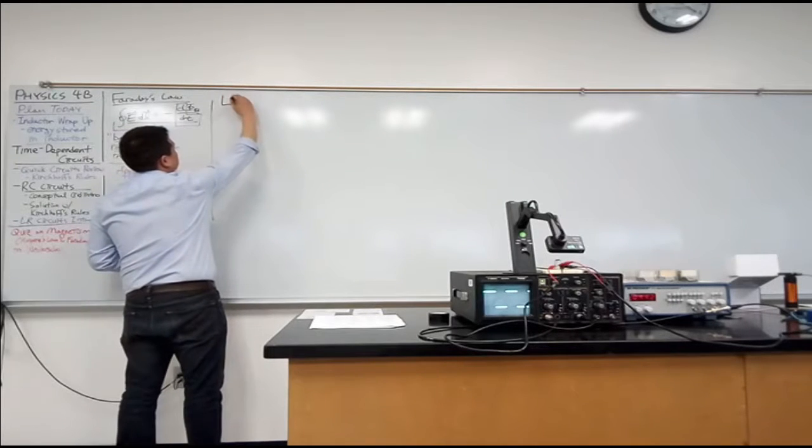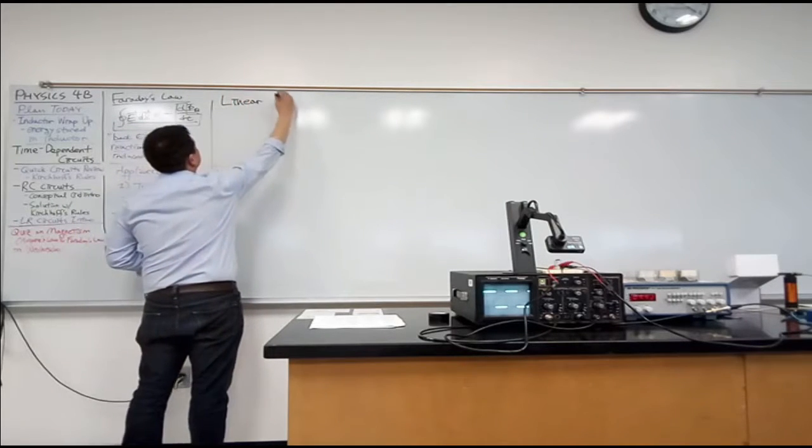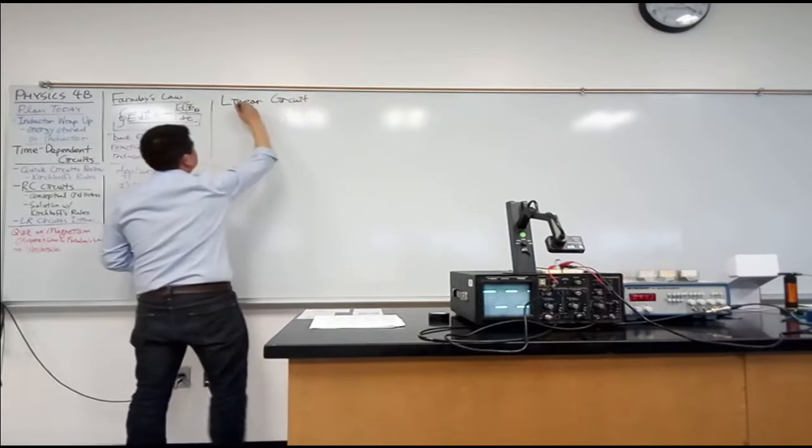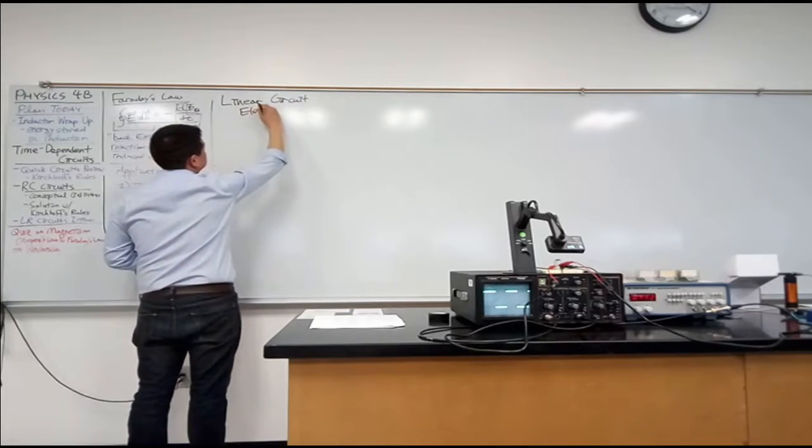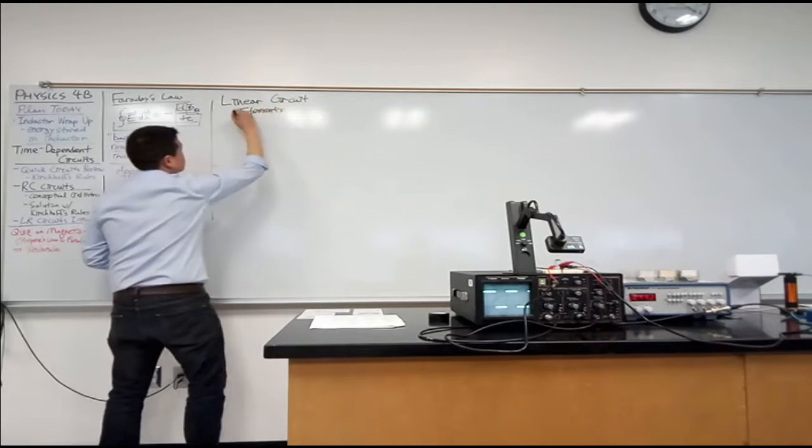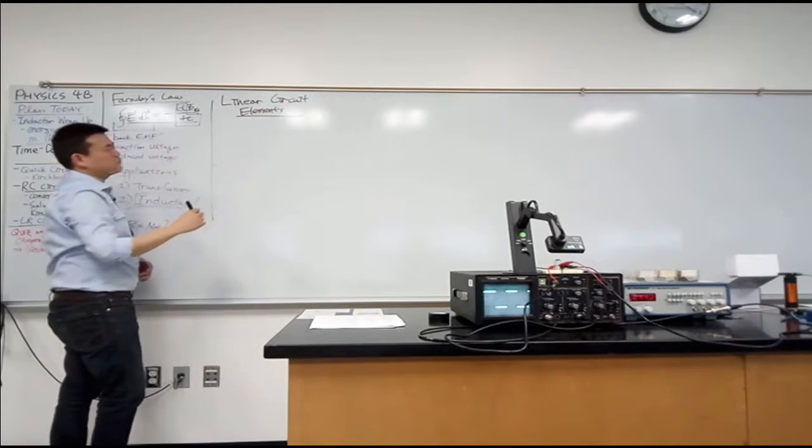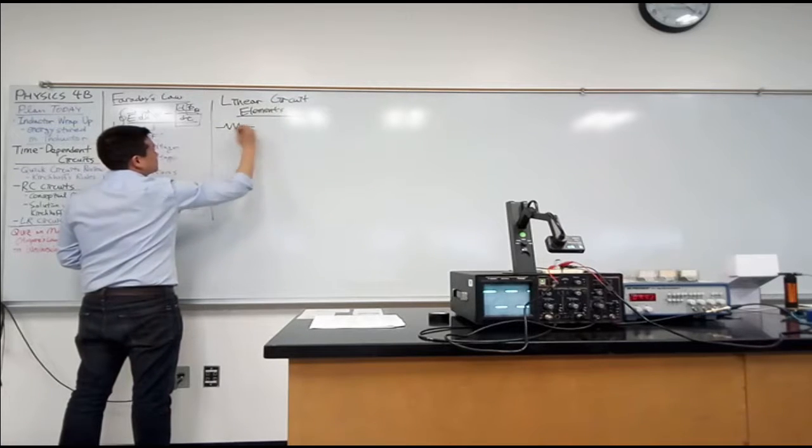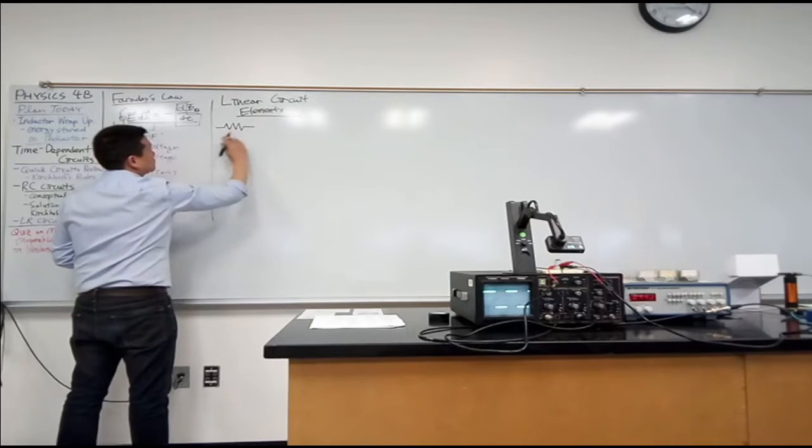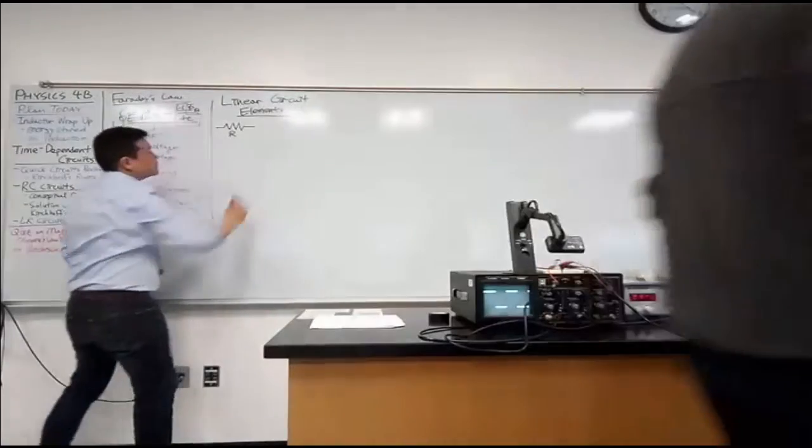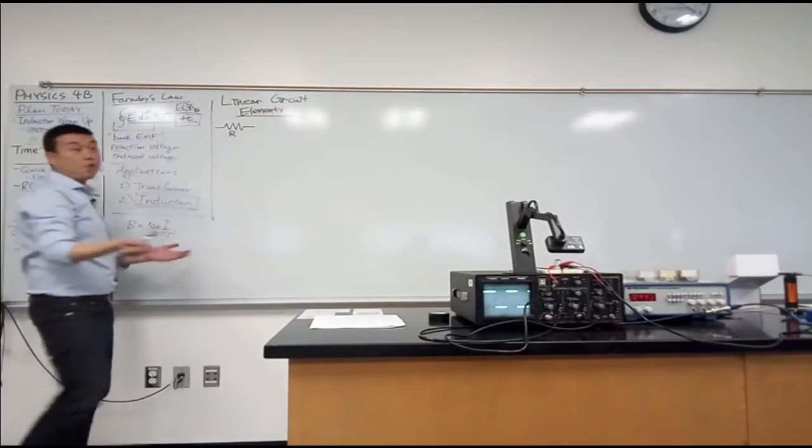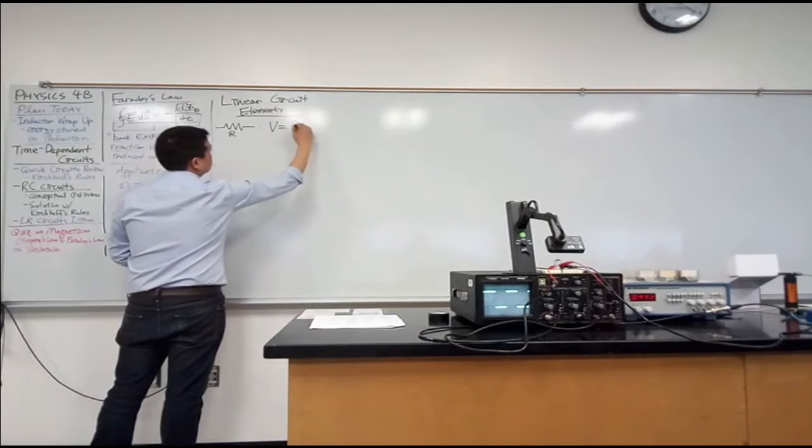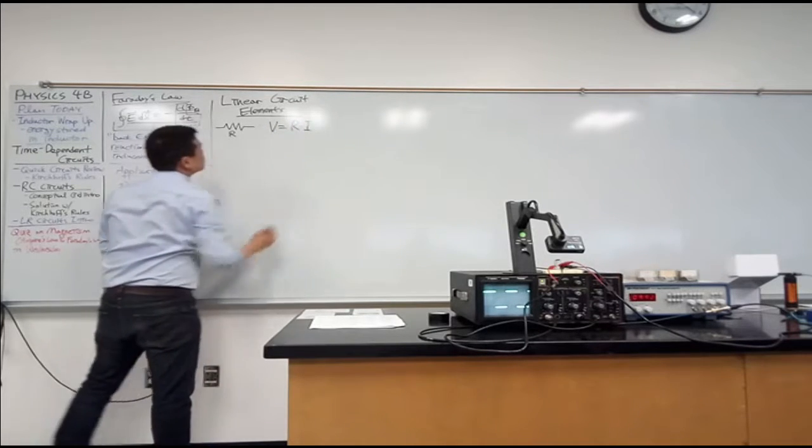These are what we are going to call linear circuit elements. The first is what you have seen before, a resistor, that's described by this relationship, Ohm's law: voltage equals resistance times current.